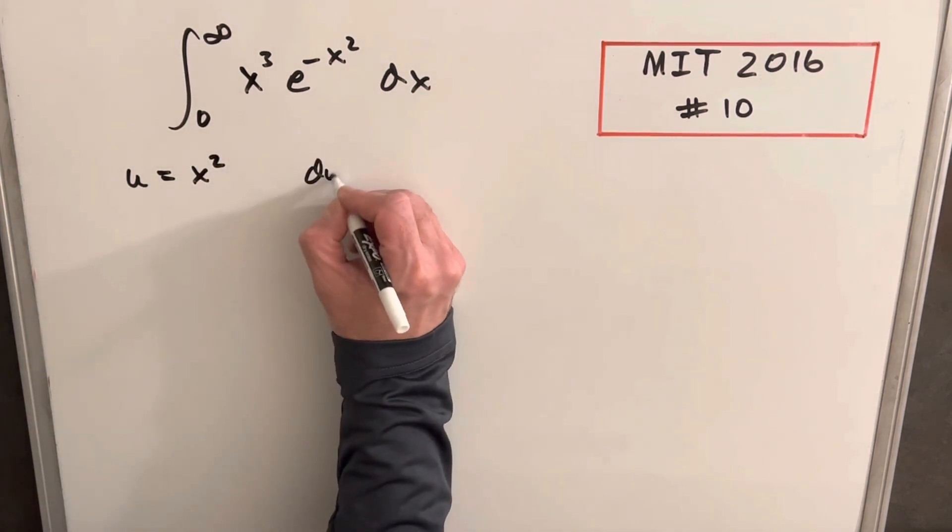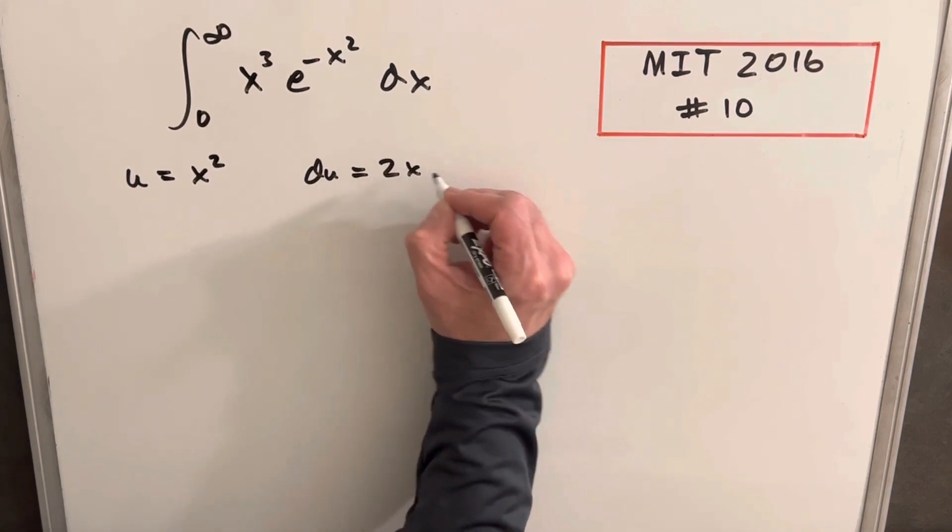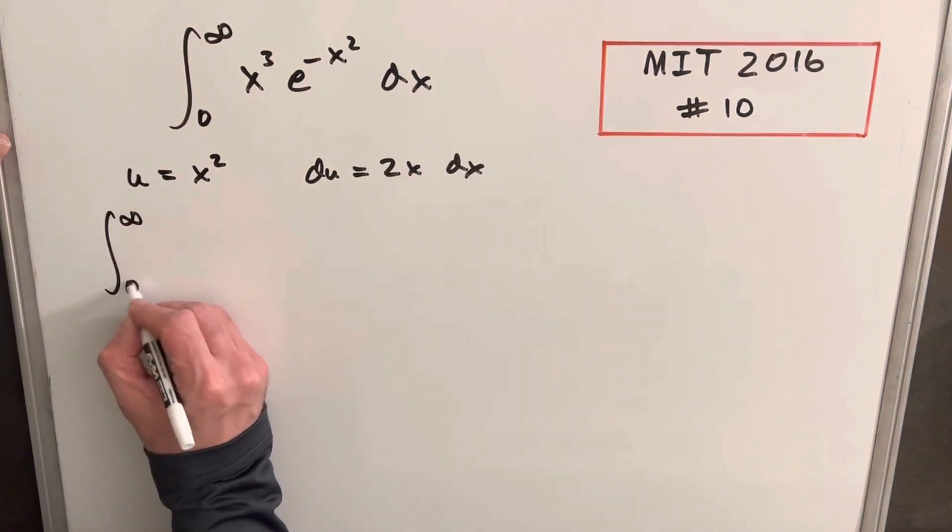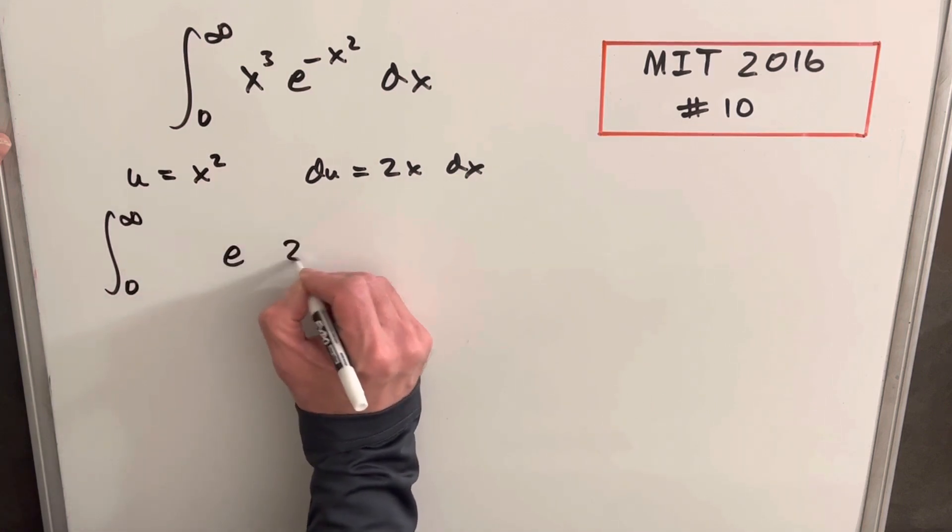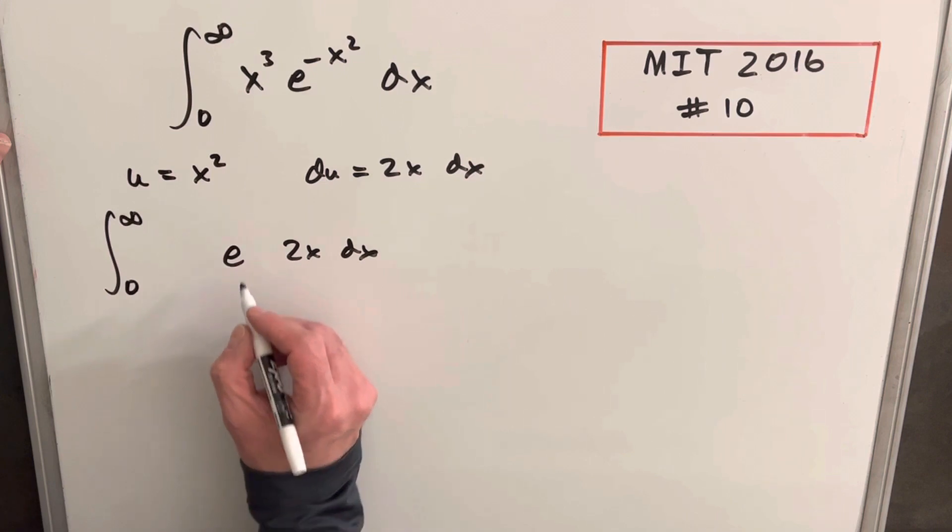So doing that, taking the derivative, du is going to be 2x. Before I do my u substitution, I'm just going to rewrite this first. So what I'll do is I'm going to put a 2x dx over here just to set up our u substitution.